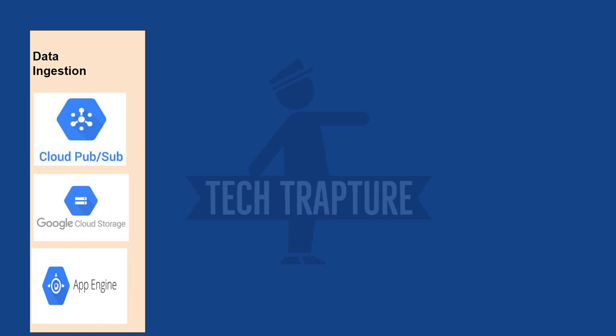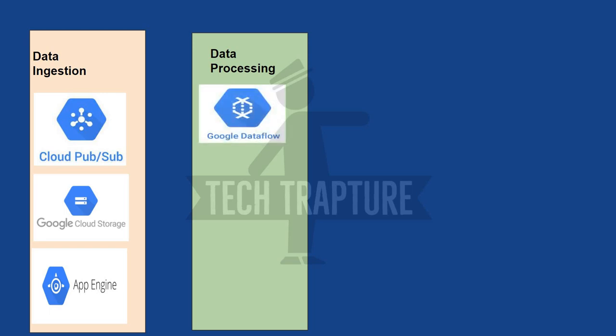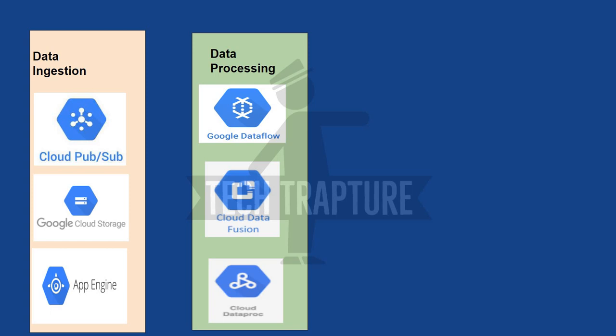Once we have a large amount of data in our storage bucket or messages in Cloud Pub/Sub and we want to process it, the options are: Google Dataflow, Cloud Data Fusion, and Cloud Dataproc. Dataflow is built on the Apache Beam framework — Beam stands for batch and stream processing. For exam questions about real-time or streaming data processing, always choose the combination of Cloud Pub/Sub and Cloud Dataflow.